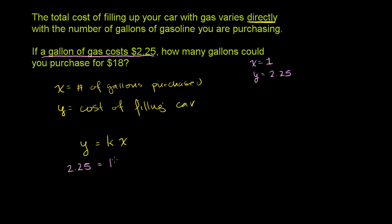$2.25 is equal to k times x, times 1. Well, I don't even have to write that times 1 there. It's essentially telling us exactly what the rate is, what k is. We don't even have to write that 1 there. k is equal to 2.25.